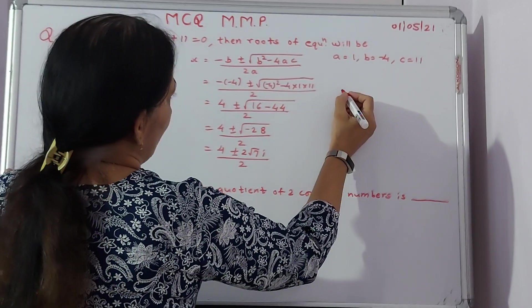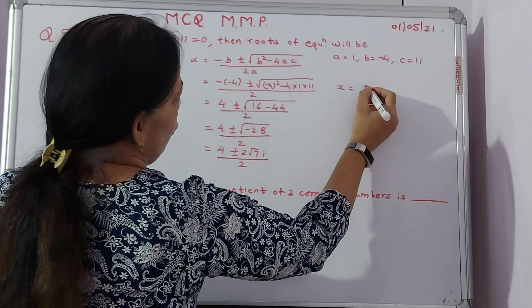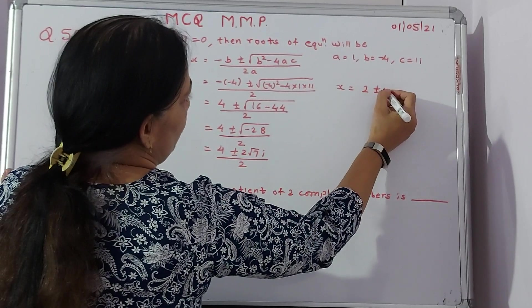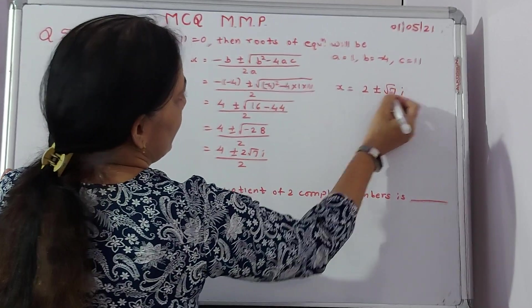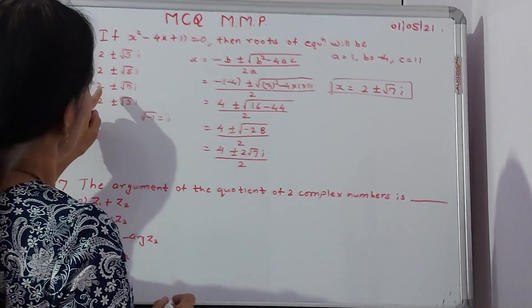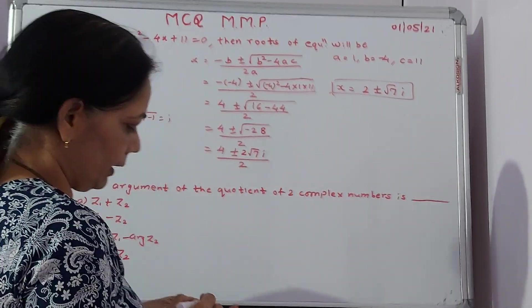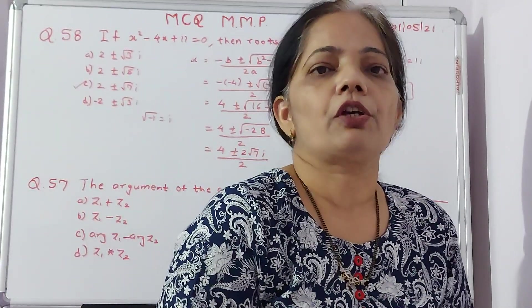Therefore, if at all I simplify it further, I can say this is 2 into 4. So 2 plus or minus under root 7 times i. 2 into 4, 2 to the 4 gets cancelled. So 2 plus or minus root 7i is the perfect answer as far as this question is concerned.